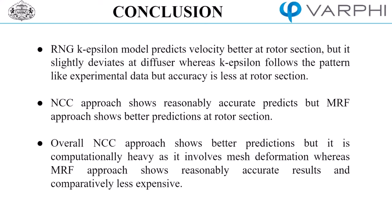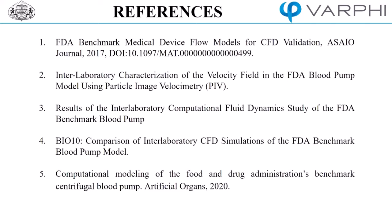Then to summarize our findings, we observed that the RNG K epsilon turbulence models provided better predictions for the velocity at the rotor section compared to the K epsilon model. However, it slightly deviated from the experimental data in the diffuser region. On the other hand, the K epsilon model followed the pattern of the experimental data but showed less accuracy in rotor section. Additionally, we consider the overall performance. The NCC approach demonstrated reasonably accurate predictions. However, the MRF approach showed even better predictions, specifically in the rotor section. It is important to note that NCC approach which involves mesh deformation showed better predictions overall. However, it comes with higher computational cost due to frequent updates of the mesh. On the contrary, the MRF approach provided reasonably accurate results and proved to be computationally less expensive.